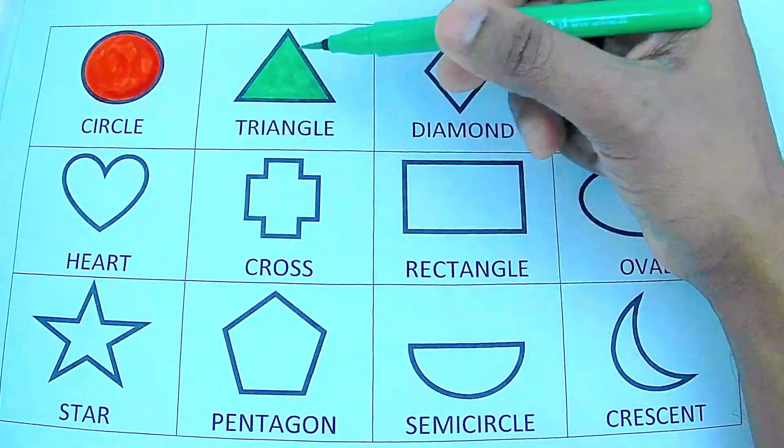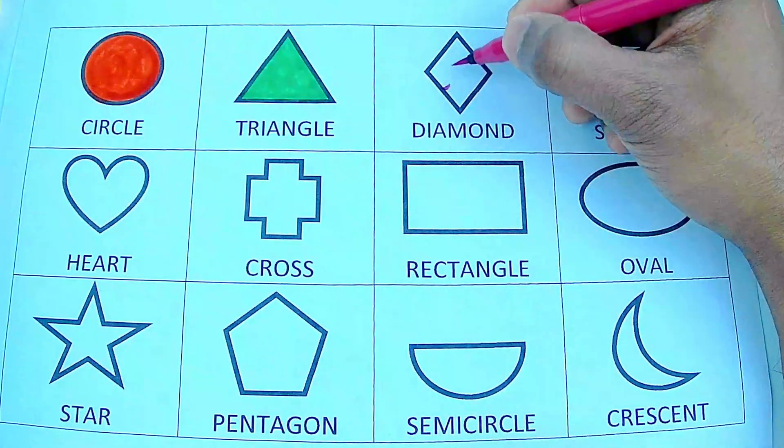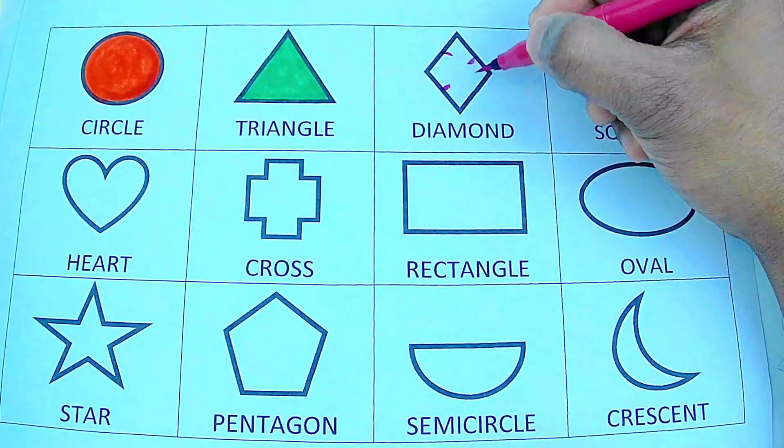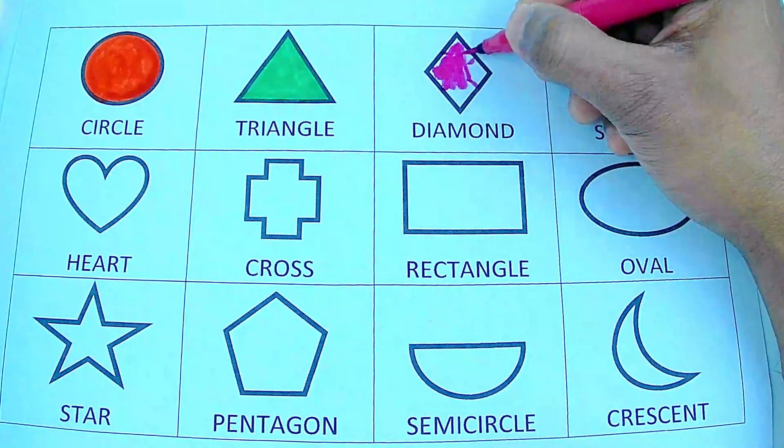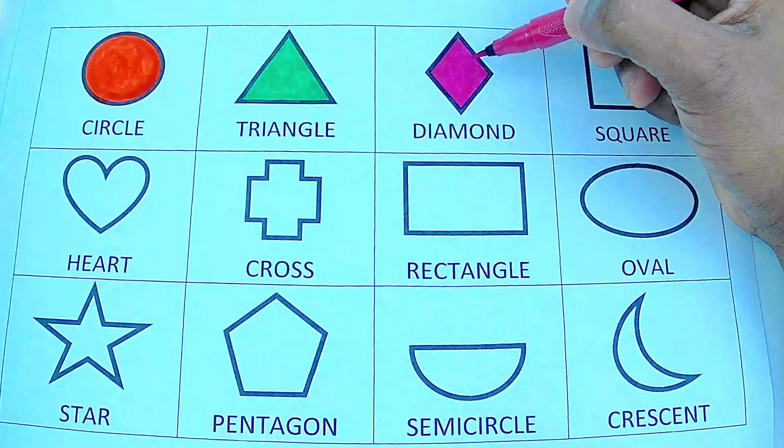Pink color diamond. The diamond has four sides. One, two, three, four. Pink diamond.